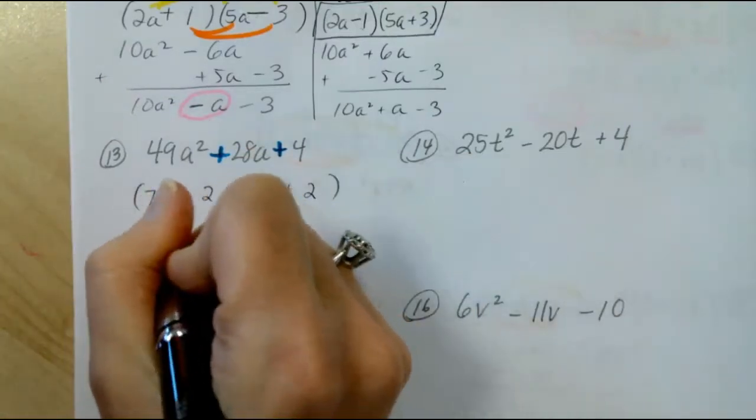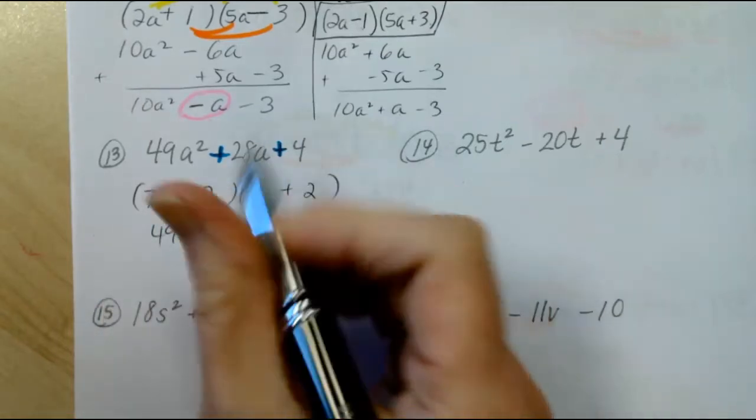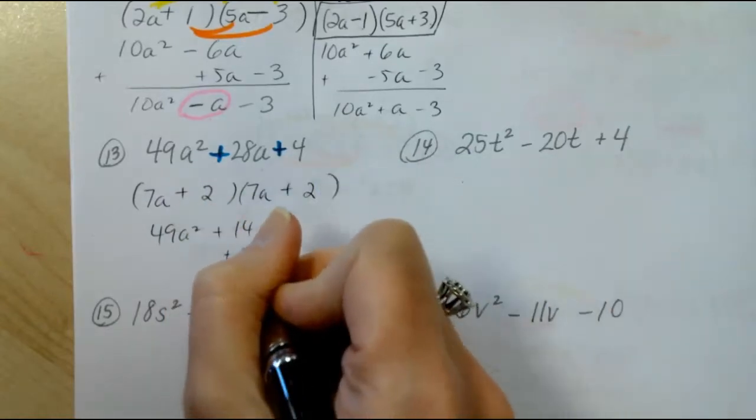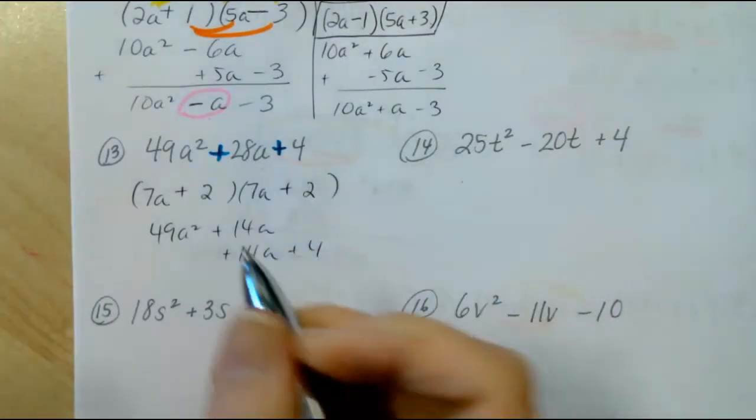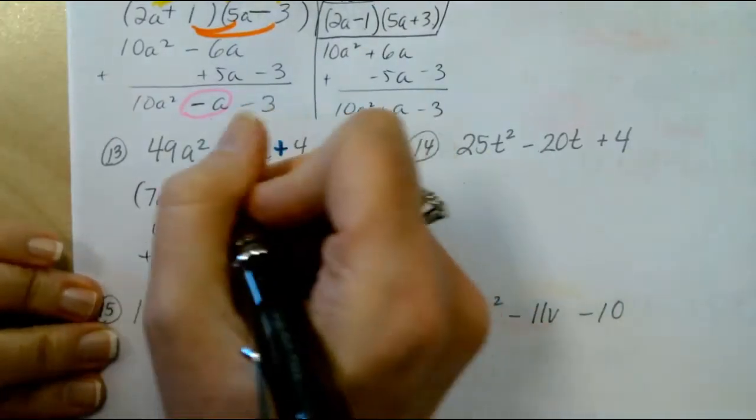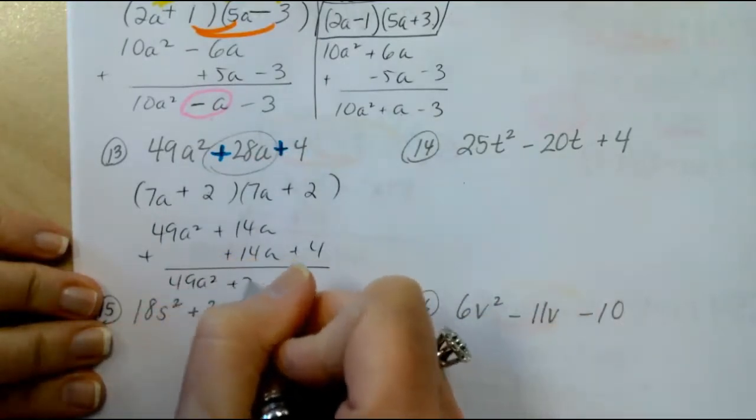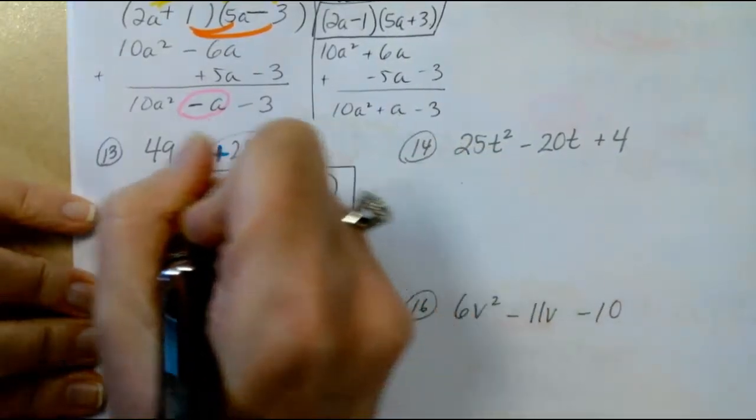7a times 7a is 49a squared. 7a times 2 is plus 14a. 2 times 7a is another 14a, and 2 times 2 is 4. My middle term is doubling, and it's given us the 28 that we want, so we have our answer.